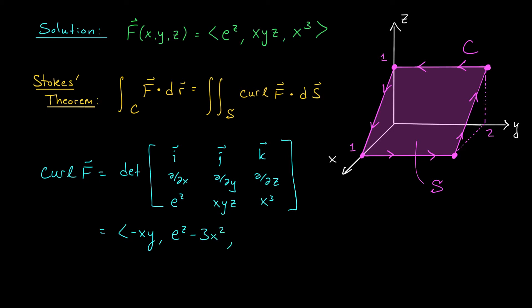And then finally, we add k times partial by partial x of xyz, minus partial by partial y of e^z. So that's simply yz.